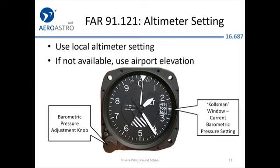We already talked about altimeter settings. Instead of the standard 29.92, you may need to adjust your altimeter to the local setting. You can dial in the ATIS frequency, which announces weather information for a particular area and provides the altimeter setting you need. If you're talking to air traffic control and they hand you from one controller to another, one of the first things they'll tell you is the altimeter setting for that area, so everybody knows what altitude they're at.